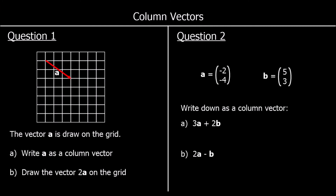And to finish up, we've got two questions. Vector A is drawn on the grid. Vector A goes 3 to the right, 2 down. So as a column vector, that's 3, negative 2. Draw 2A on the grid. So 2A is double this — it'll be 6 to the right and 4 down.